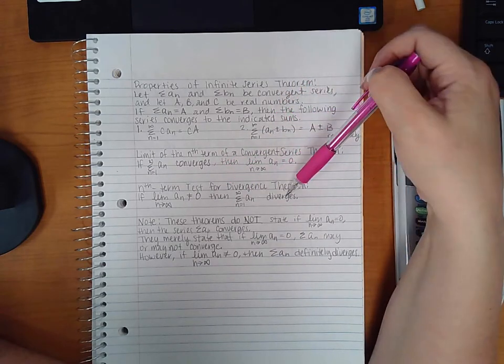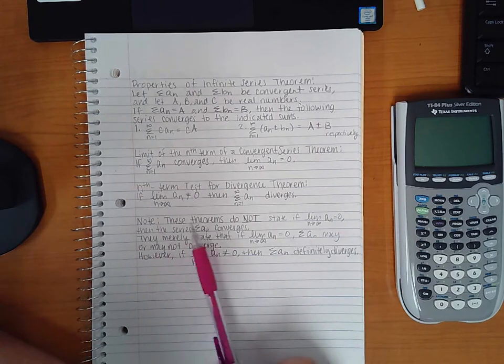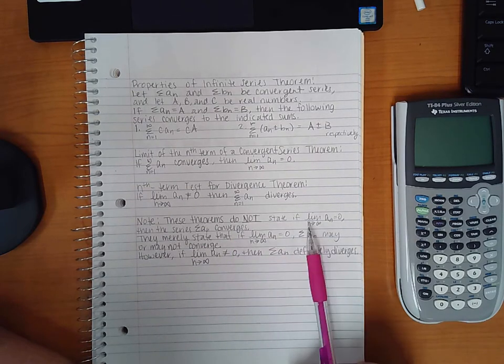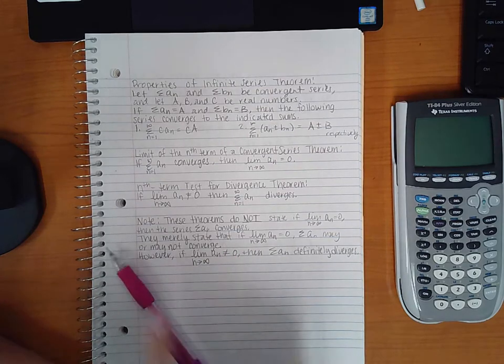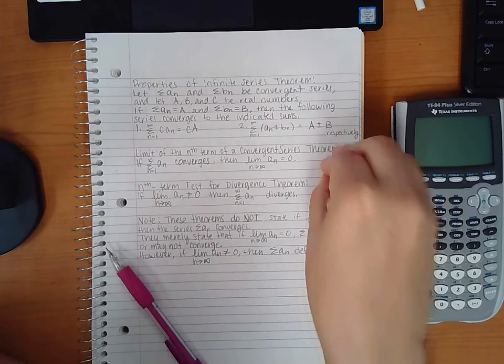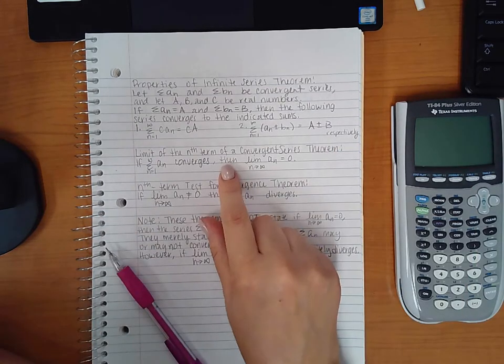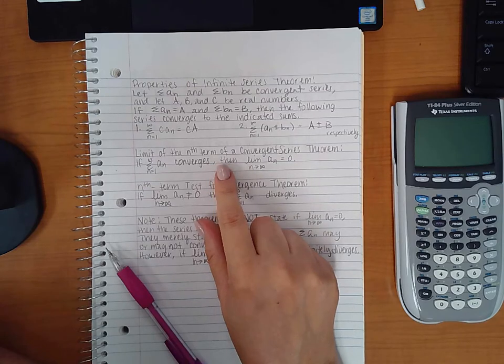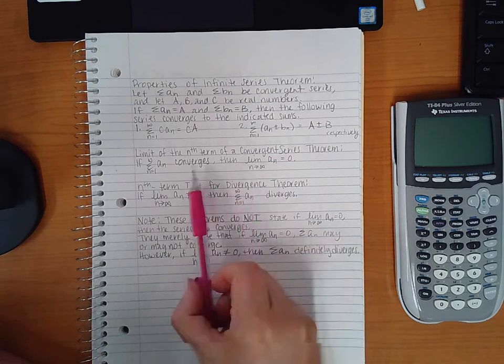Now I want to make a note here: these theorems do not state that if the limit equals zero then the series converges. These are one-sided implications, so one side implies the other; it does not go the other way around. If it did, it wouldn't say 'then,' it would say 'if and only when' or 'if and only then.' But this doesn't say that, which means this statement doesn't go both ways.